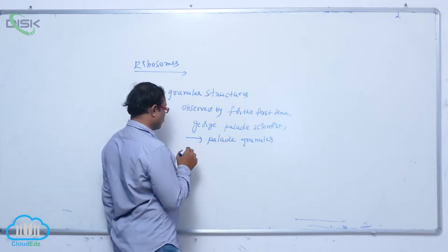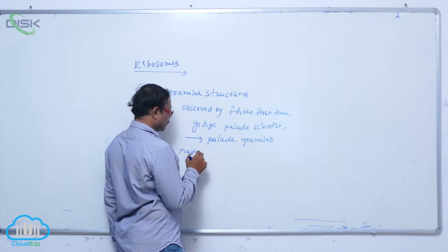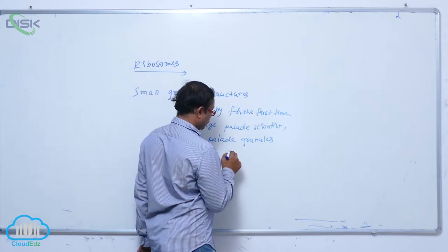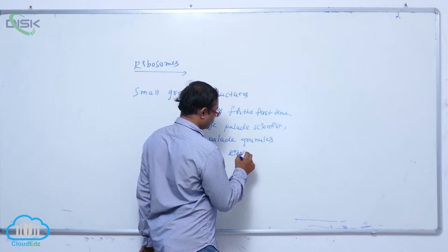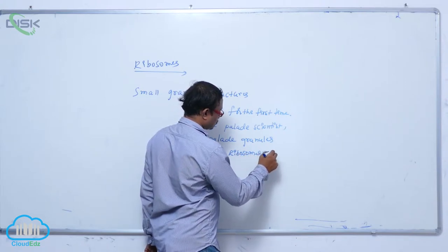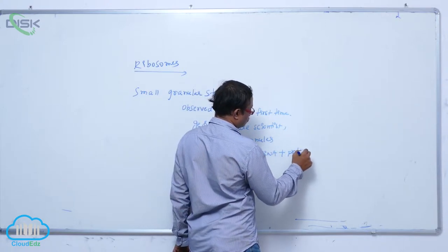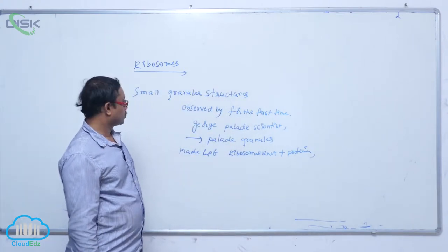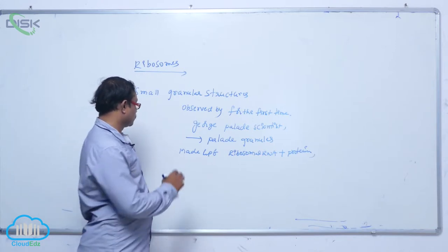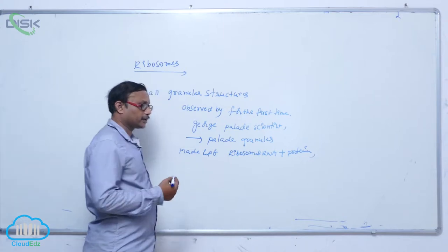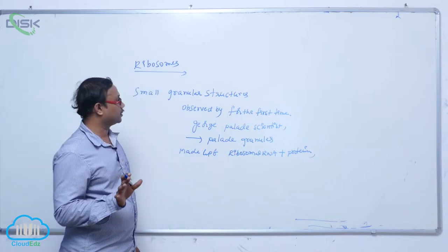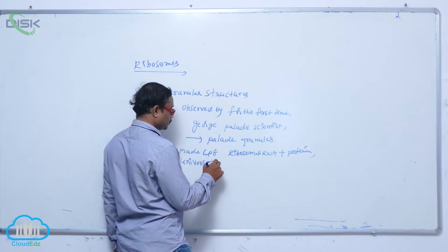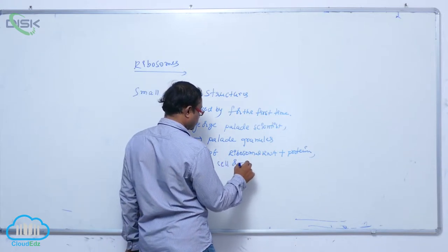Generally, these ribosomes are made up of ribosomal RNA plus protein. They are present in all prokaryotic cells and eukaryotic cells — all living organisms. That's why they are known as the universal cell organelle.